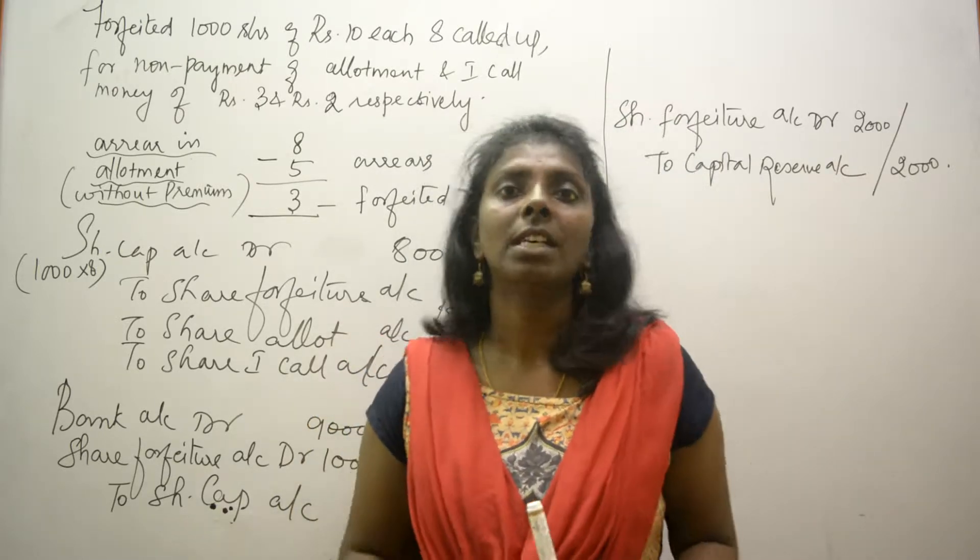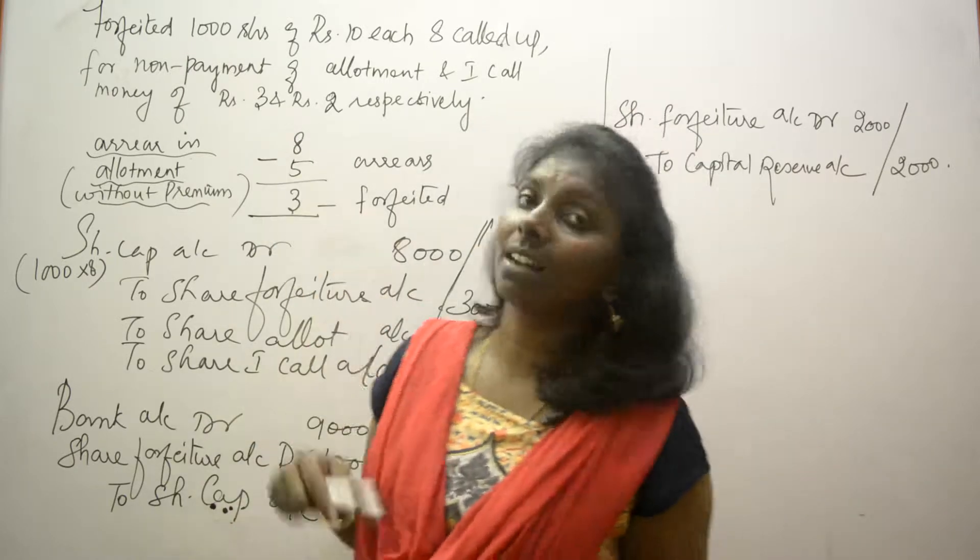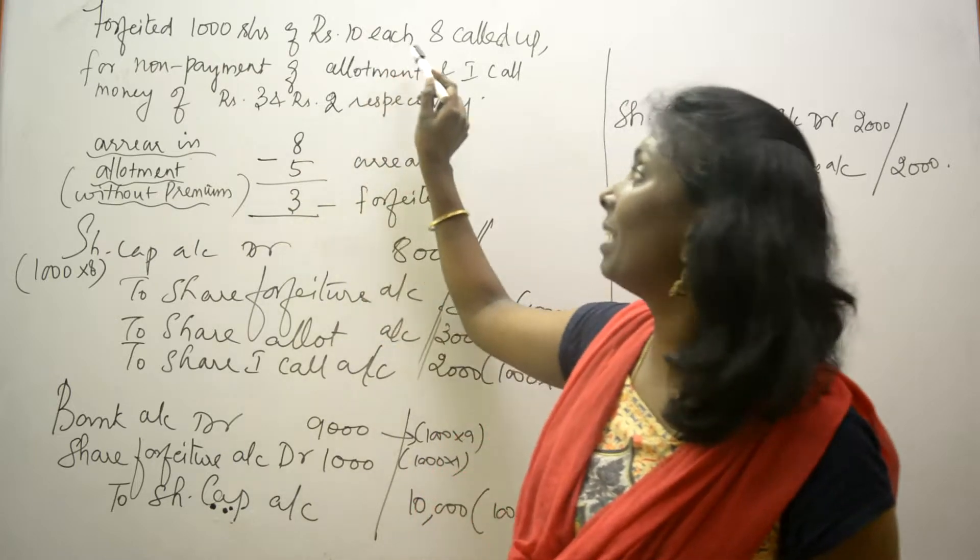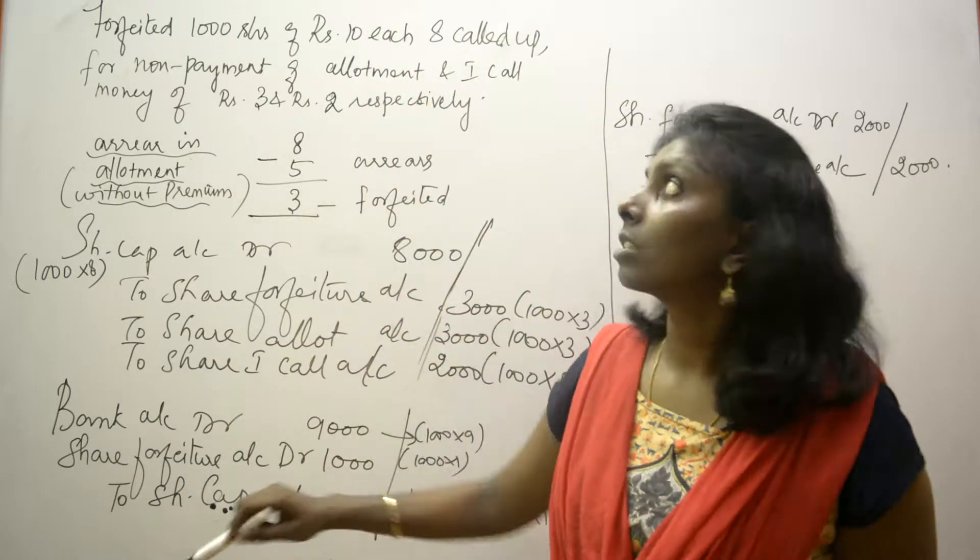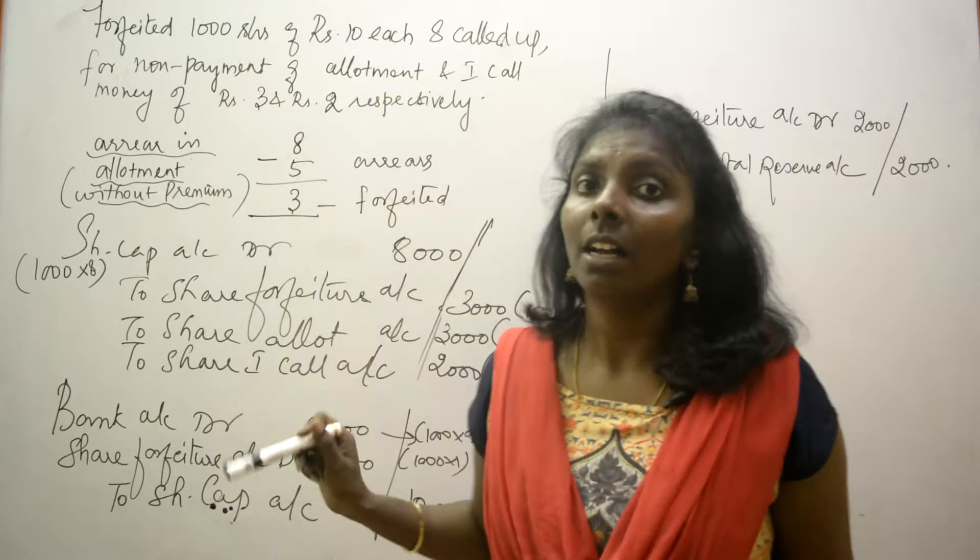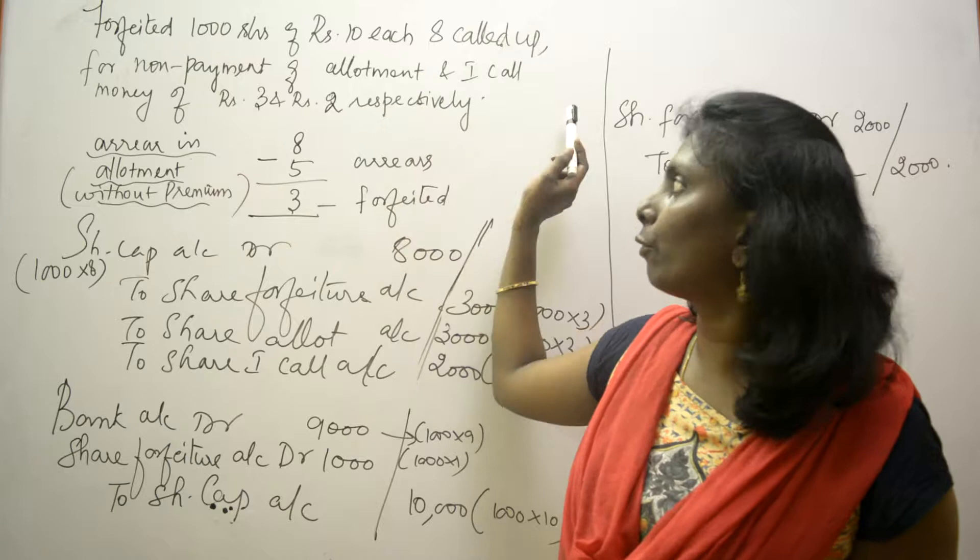I've taken a scenario here. We're going to forfeit 1000 shares of rupees 10 each. Look at this problem - it's only 8 called up, so the share value is 10 rupees but it's only 8 called up for non-payment of allotment and first call money, which is 3 and 2, so 3 rupees for allotment and 2 rupees for first call respectively.